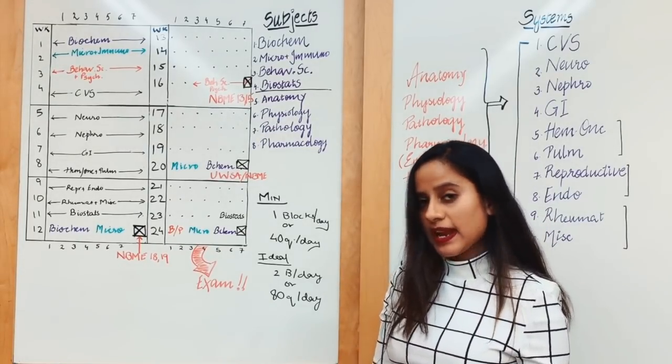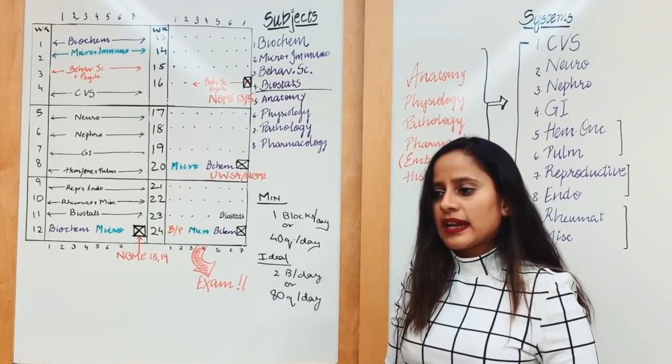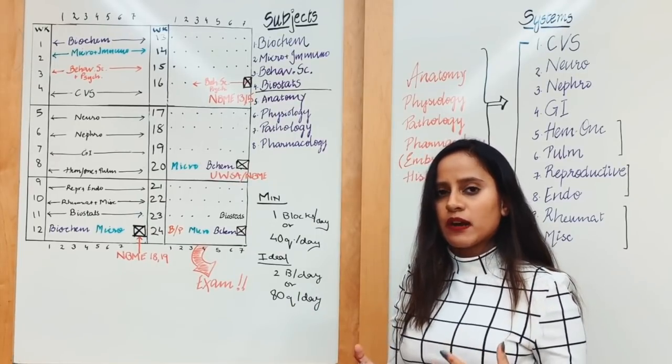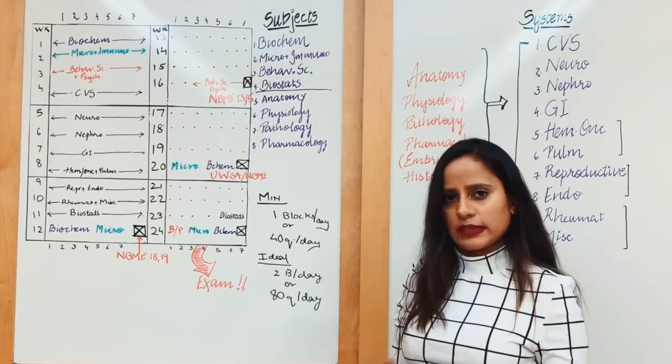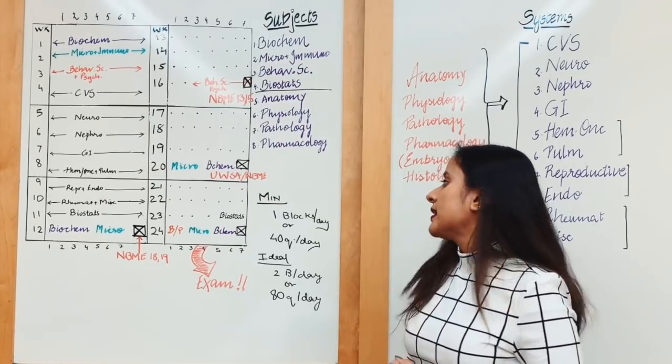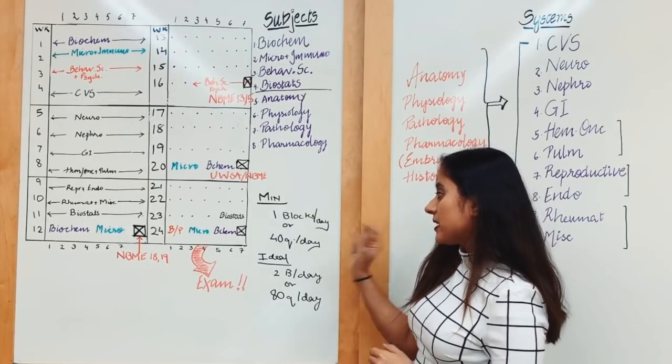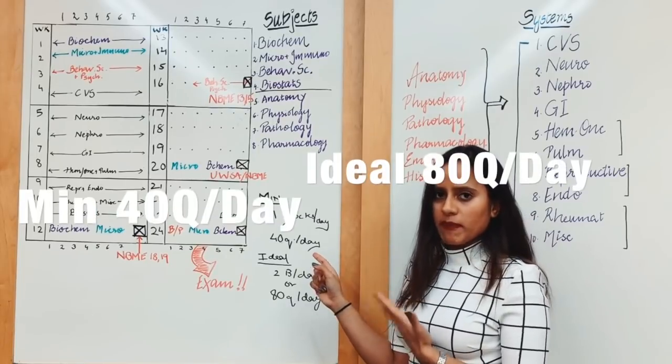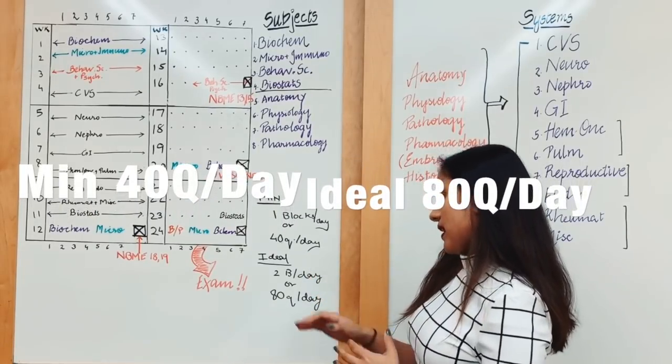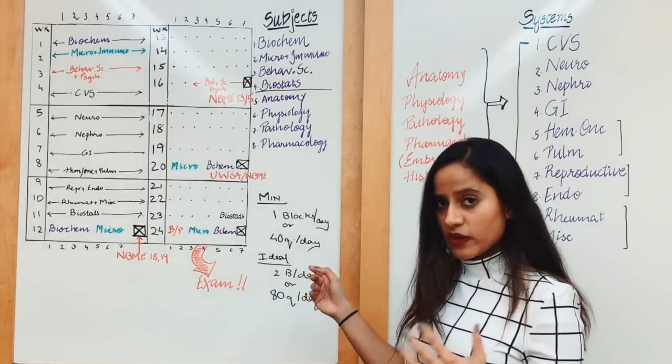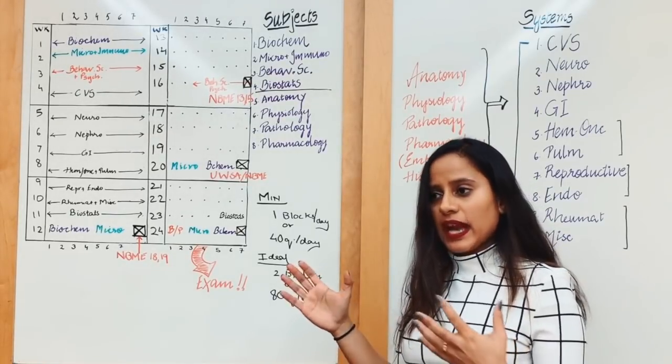A good way to understand that is: if you are doing rotations like your final year rotations and preparing for Step One, then I understand that you would have had about five to six hours at the most to study each day. If you do about a minimum of 40 questions or one block per day, or an ideal would be two blocks or 80 questions per day...